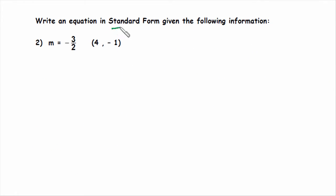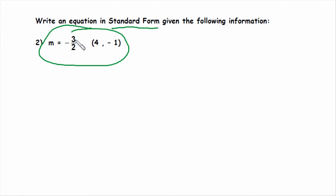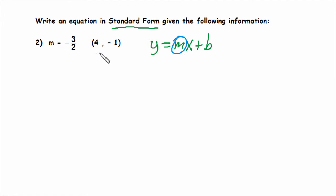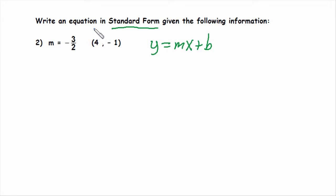Write an equation in standard form given the following information. Later in this unit we'll work with point-slope form, which would be easier, but right now we'll stick with what we know and follow our process. First, we need the slope — we have it right here: m is negative 3 over 2. Then we write it in slope-intercept form: y equals mx plus b. We fill in what we know — m, x, and y.